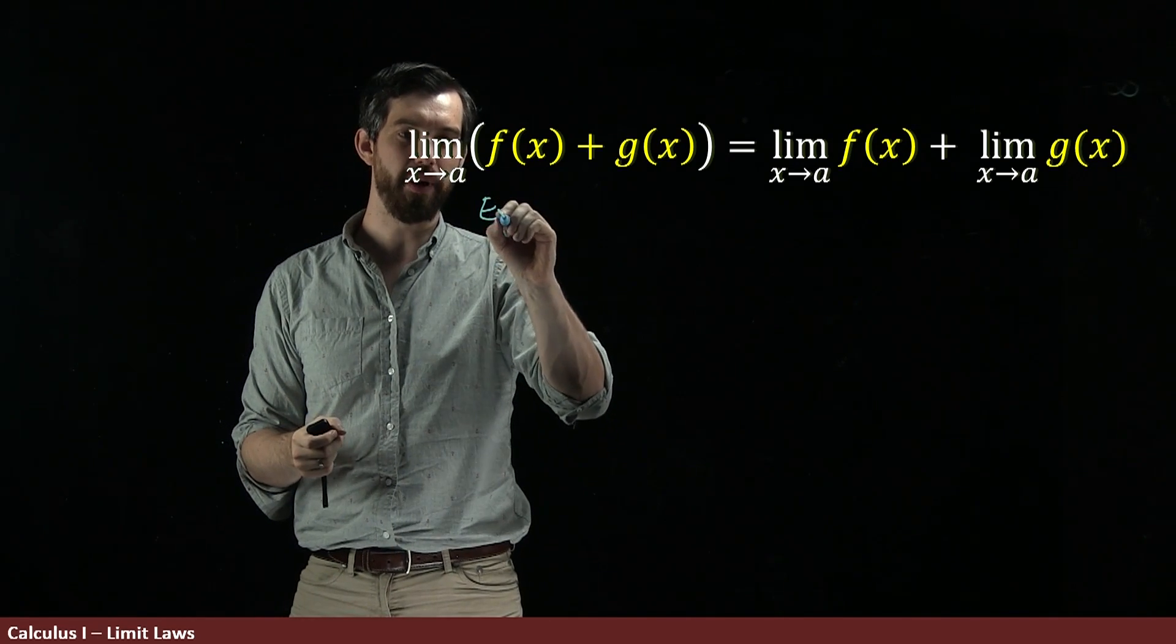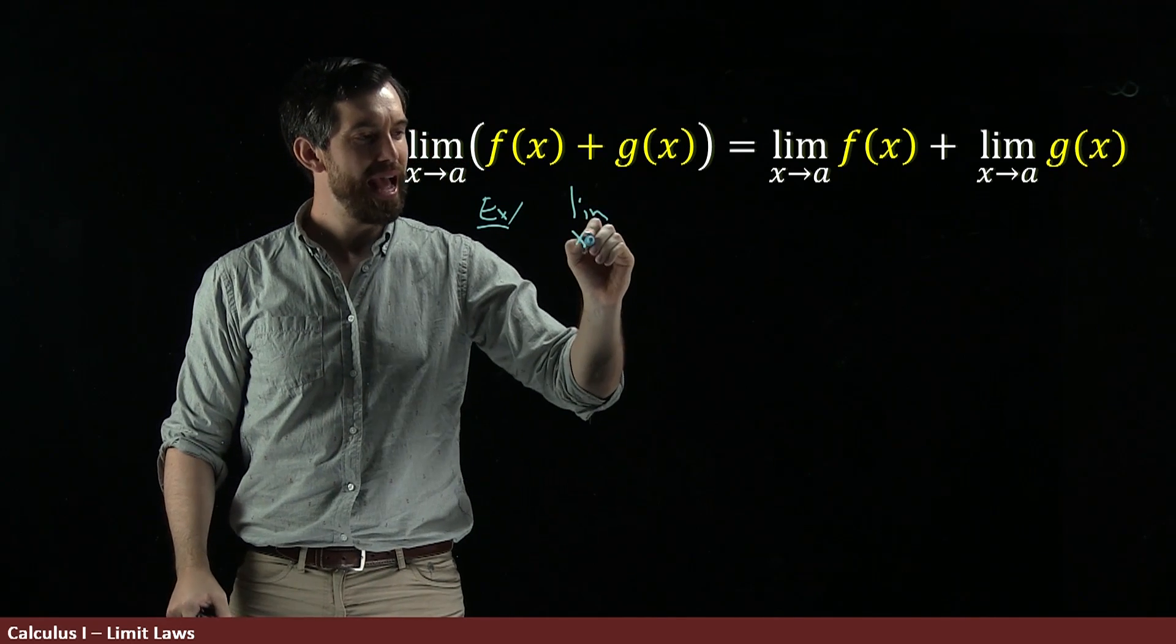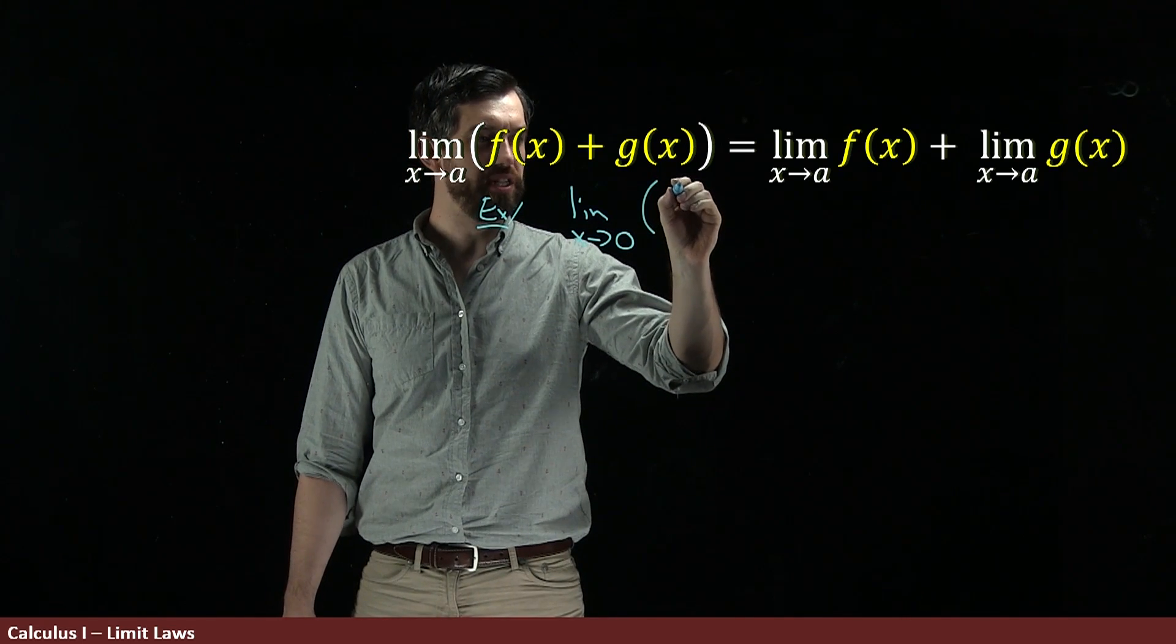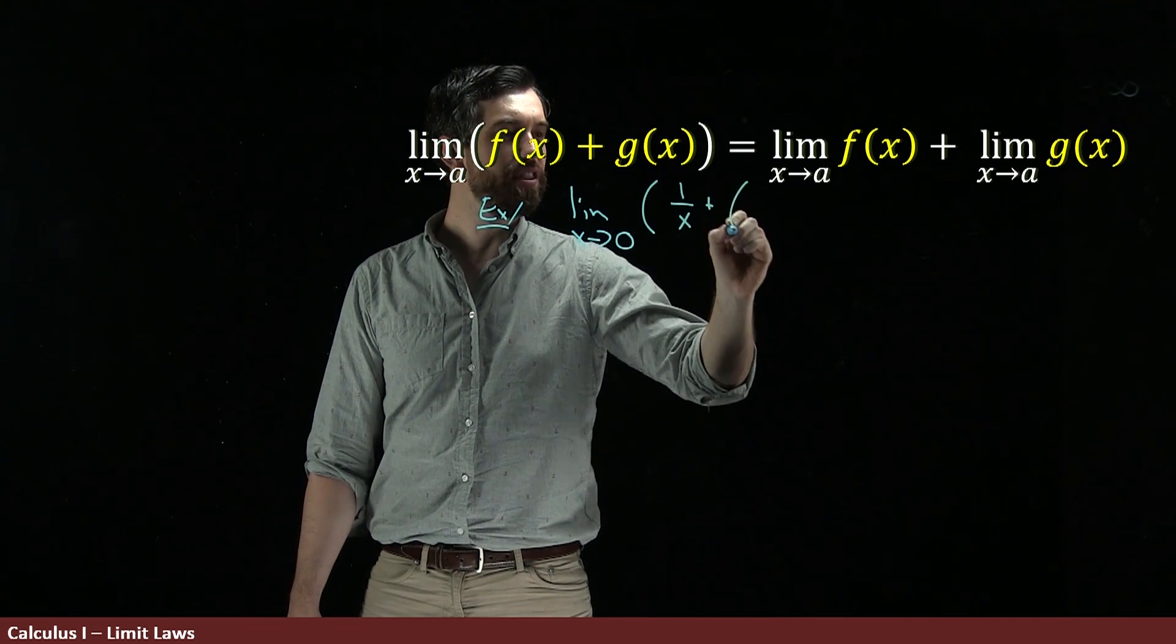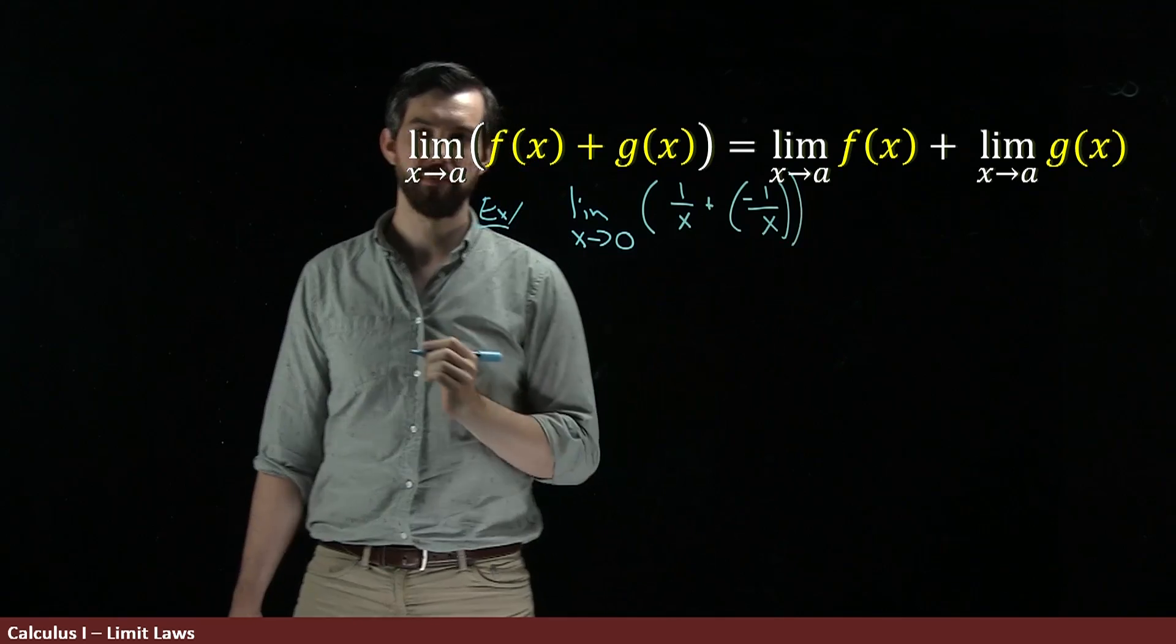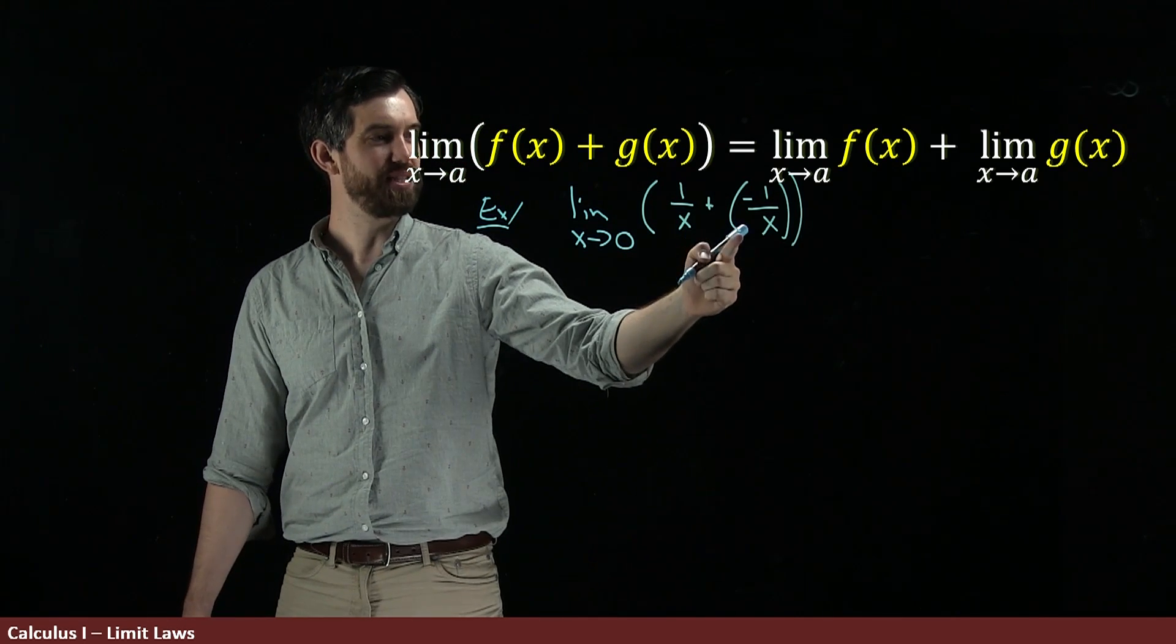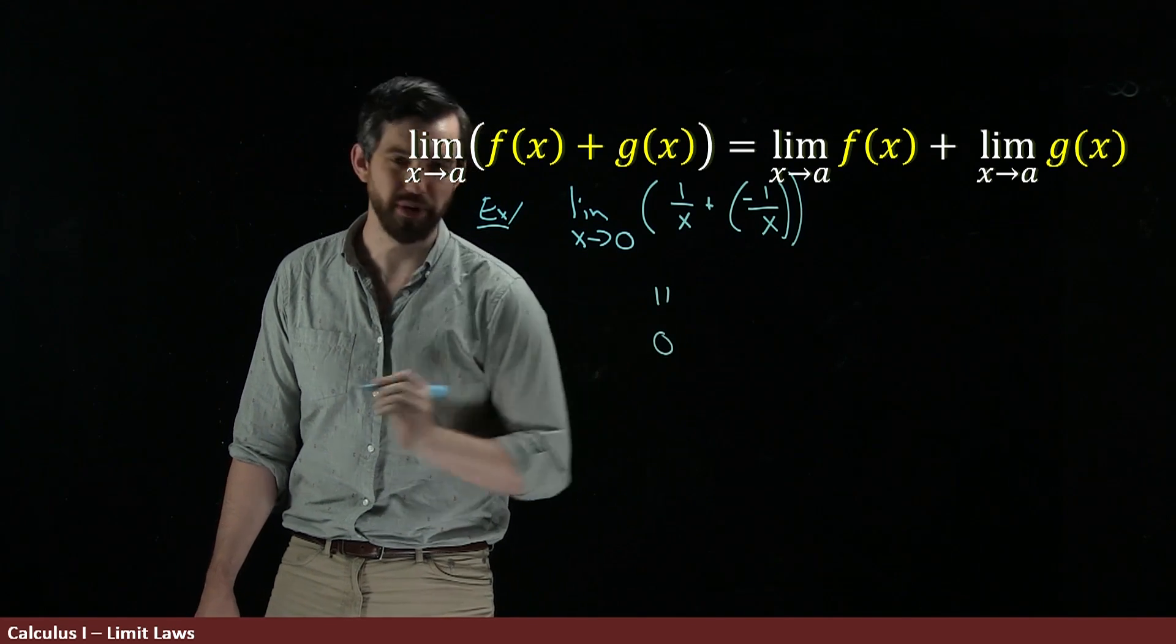Well, let me show you a specific example. Let's do the limit as x goes to the value of 0. I'm going to do the sum of two functions. It's going to be the function 1 over x and the function minus 1 divided out by x. Which, 1 over x plus minus 1 over x is just a different way of saying that this is just going to be equal to 0, because indeed they cancel.